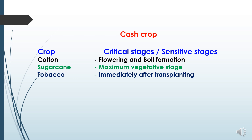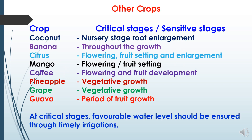In cash crops like cotton, flowering and boll formation stages are critical for irrigation. In sugarcane, maximum vegetative growth stage. In tobacco, immediately after transplanting is most critical. In other crops like coconut, nursery stage and root enlargement are most critical. In banana, throughout the growth period, as banana requires frequent irrigations. In citrus, flowering, fruit setting and enlargement stage. In mango, flowering and fruit setting are most critical. In coffee, flowering and fruit development stage. In pineapple and grape, vegetative growth is critical. In guava, the period of fruit growth is the most sensitive stage. At critical stages, a favorable water level should be ensured through timely irrigations.